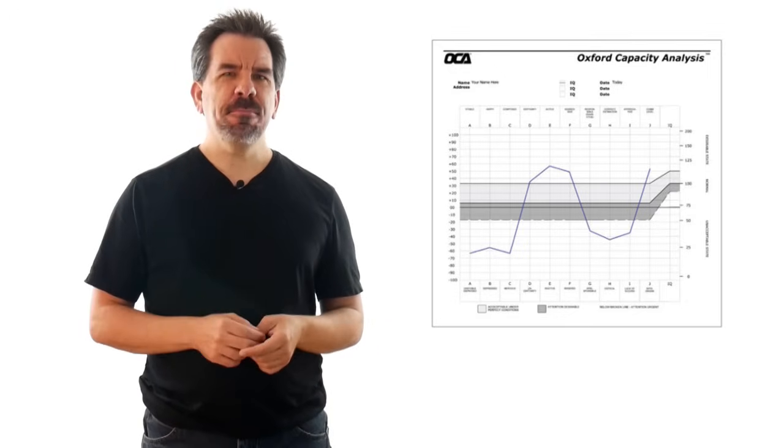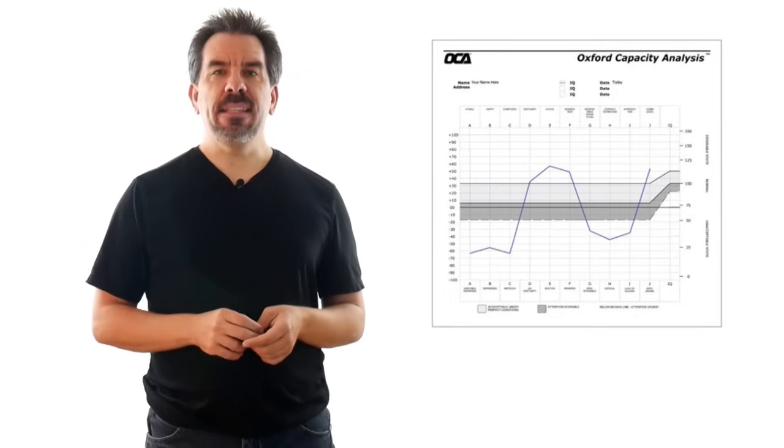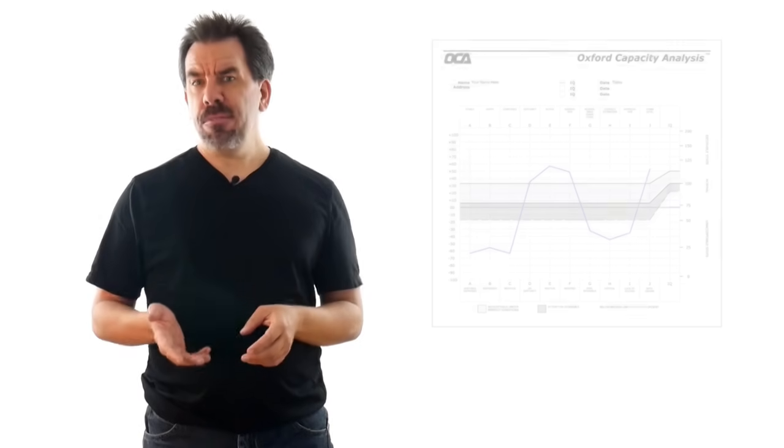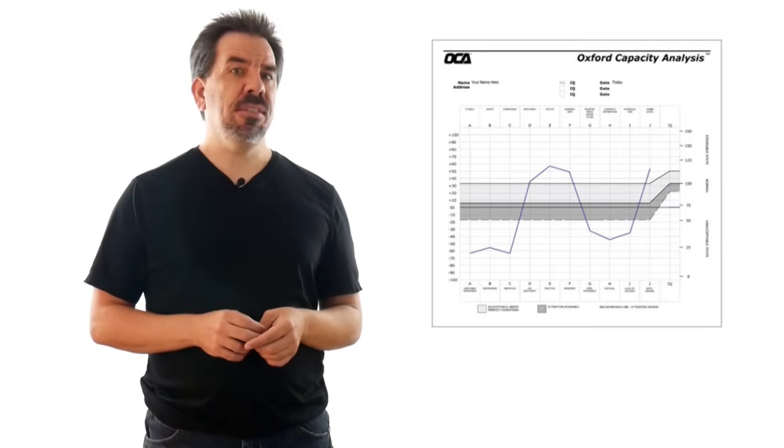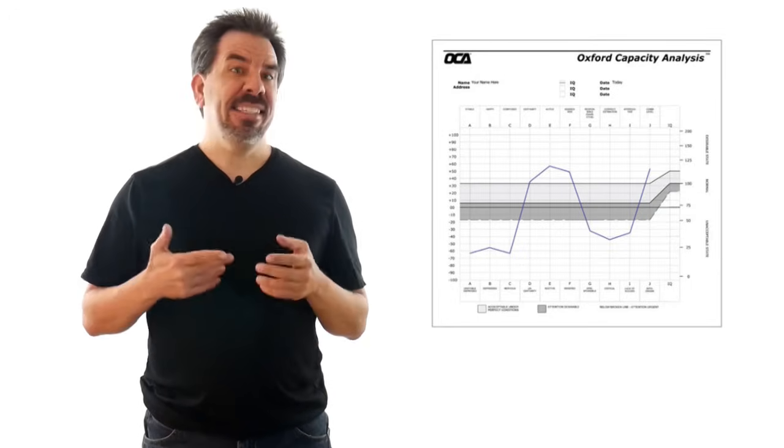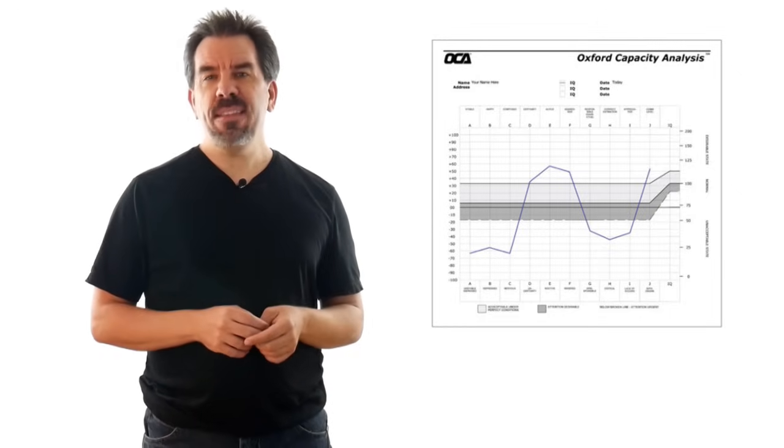Why does it do this? Hubbard wrote a bulletin about how to read the OCA on December 19, 1971, where he said, An OCA with any point on the left side of the graph in low or undesirable range means the PC is out of valence. Any low point on the right side of the graph means the PC is crazy. Out of valence means the person is in someone else's personality or is somewhat schizophrenic. So the test is actually designed to produce this result on any normal Joe who's taking the test for the first time.